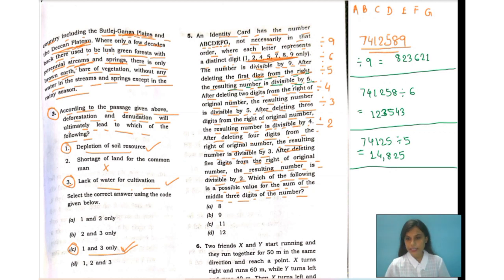Now the next condition: after deleting three digits from the right of the original number, the resulting number is divisible by 4. Let's remove another digit, that is 7, 4, 1, 2 divided by 4. We have removed three digits. Can you see 5, 8, and 9? We have started from 9, 8, 5. We have removed three digits. So it's coming down to 1, 8, 5, 3. So it is also getting divisible.